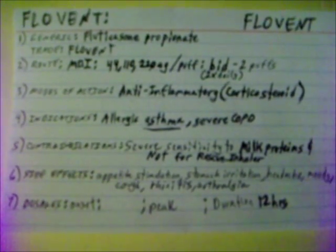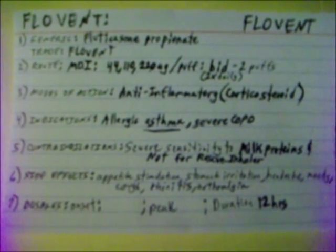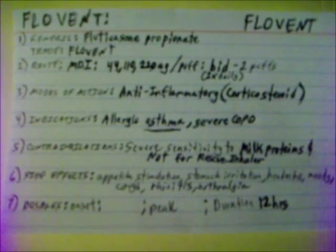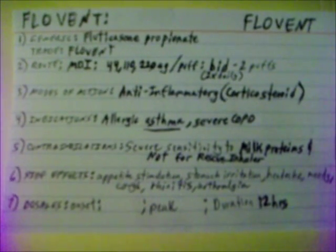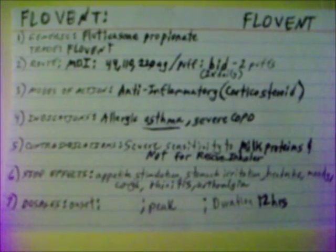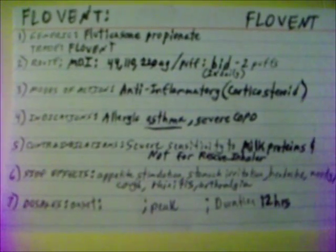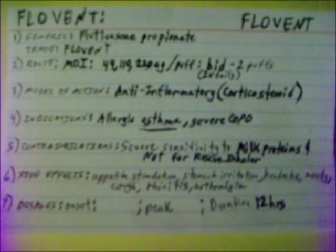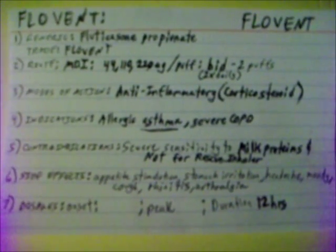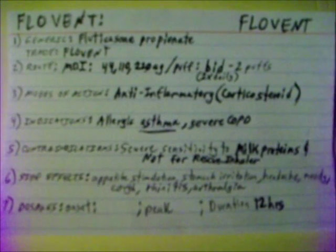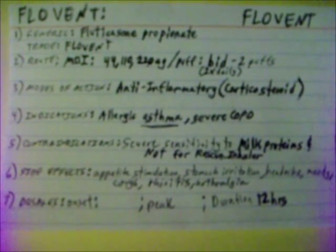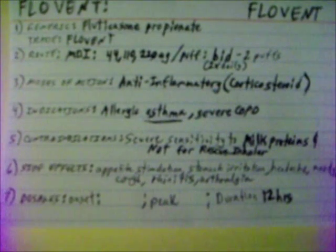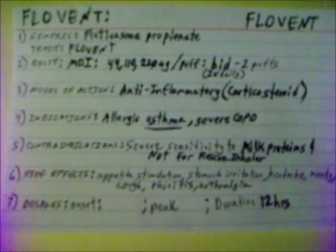Contraindications for Flovent are severe sensitivity to milk proteins and it is not for use as a rescue inhaler. Side effects are appetite stimulation, stomach irritation, headache, moodiness, cough, rhinitis, and arthralgia — which is pain in the joints. Duration is 12 hours.